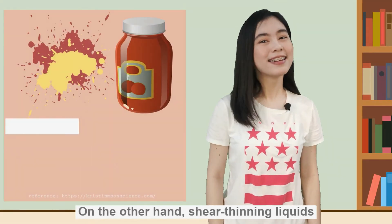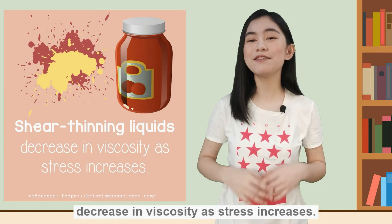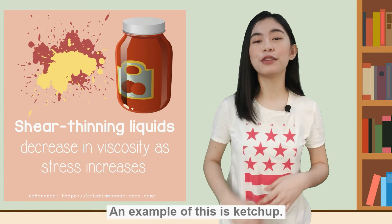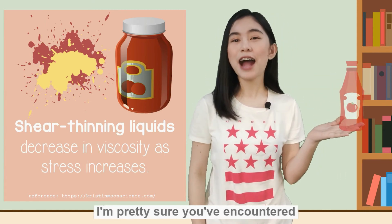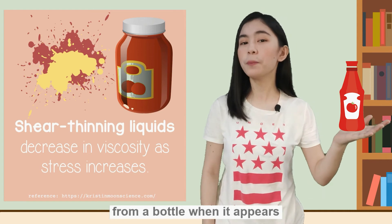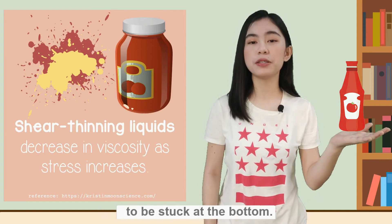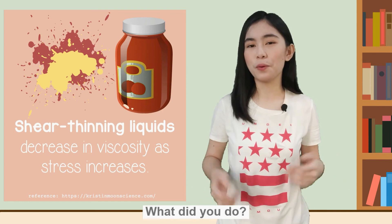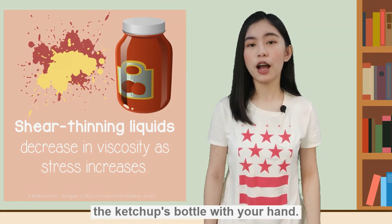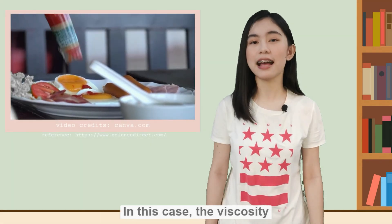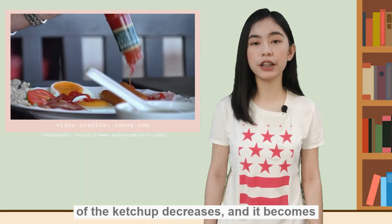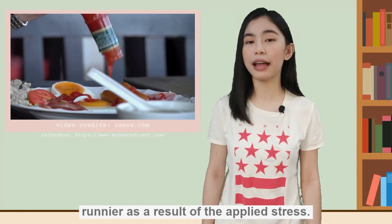On the other hand, shear thinning liquids decrease in viscosity as stress increases. An example of this is ketchup. You've likely encountered the difficulty of pouring ketchup from a bottle when it appears to be stuck at the bottom. Most likely, you pounded on the ketchup bottle with your hand. In this case, the viscosity of the ketchup decreases and it becomes runnier as a result of applied stress.